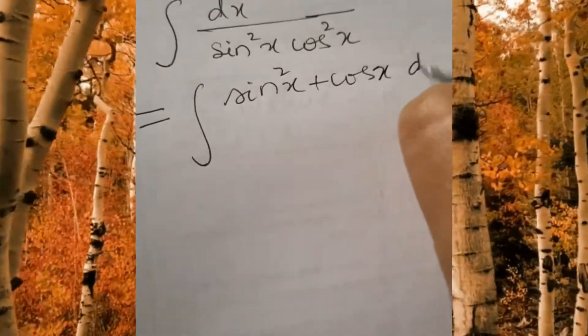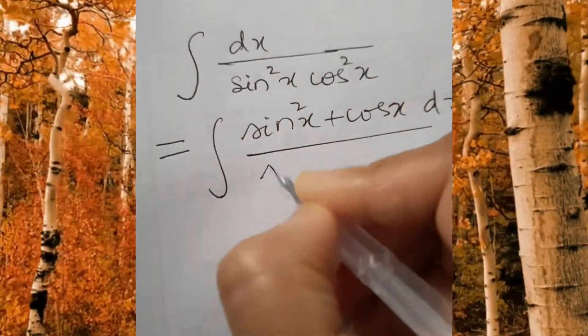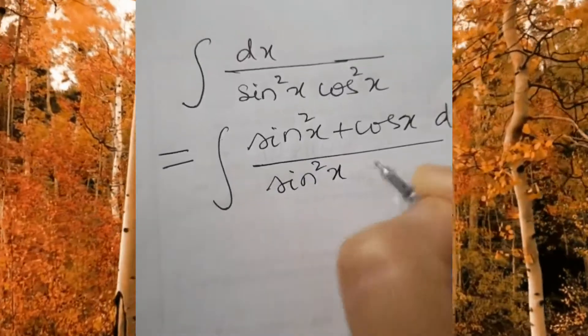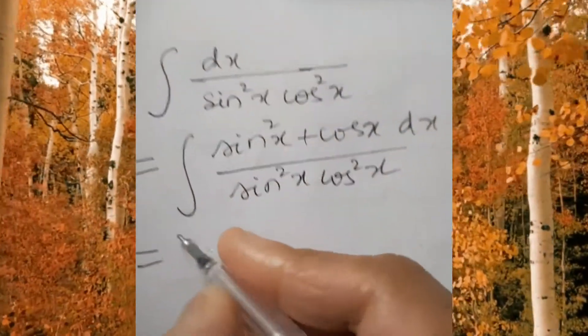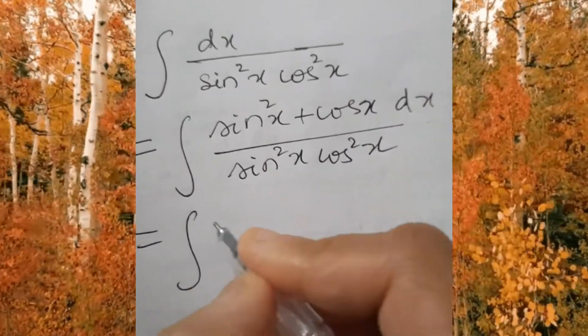Here we are finding integral of dx divided by sin square x cos square x. For this we use the trigonometry identity sin square x plus cos square x equal to 1.